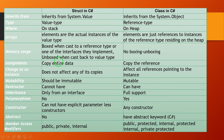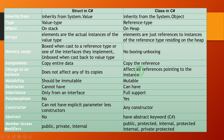For assignment: struct copies the entire data because it is a value type, while class copies the reference because it is a reference type. Changes to an instance do not affect any of its copies for struct (value type), but for class, changes affect all references pointing to the instance because class is a reference type.